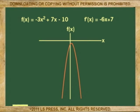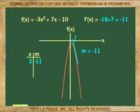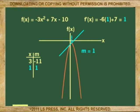Which means that when x is 3, negative 6x plus 7 equals negative 11. And when x is 1, the slope is positive 1. And when x is 0, the slope is 7. And so on.